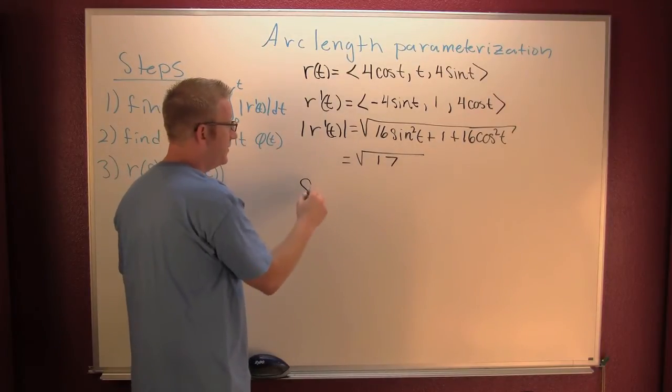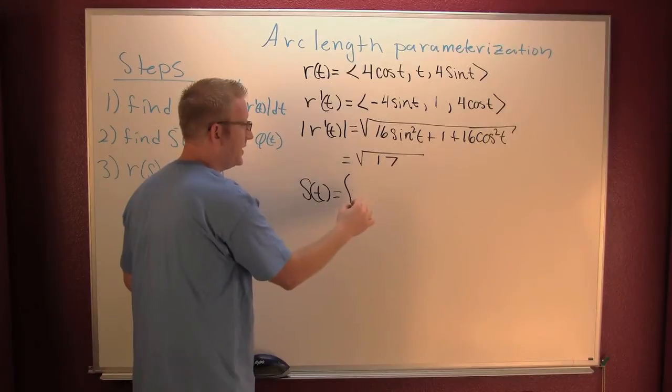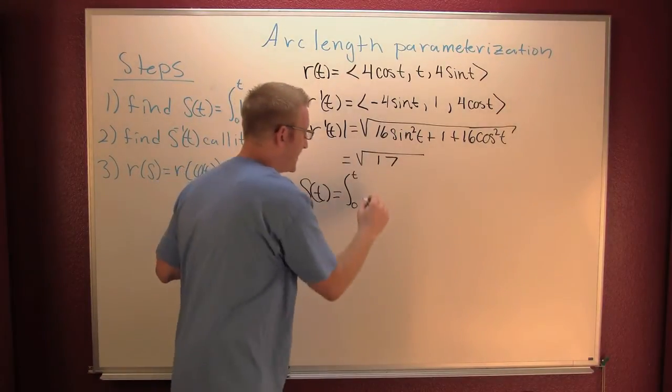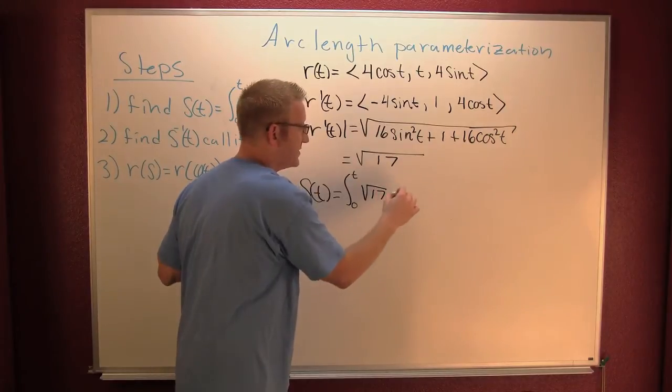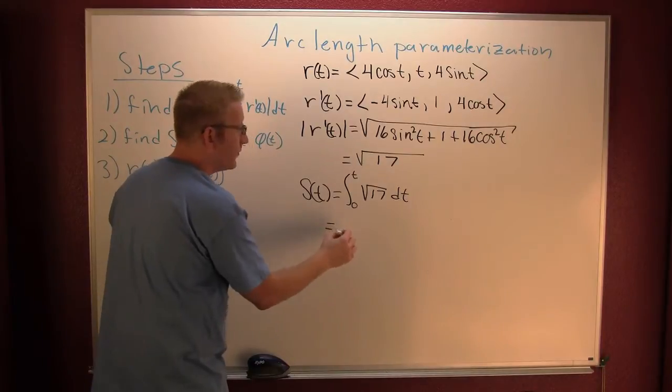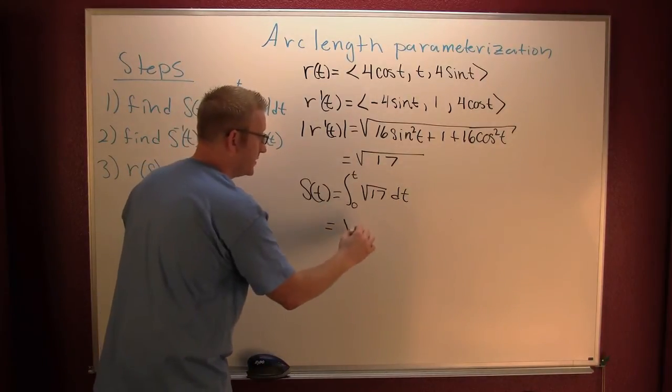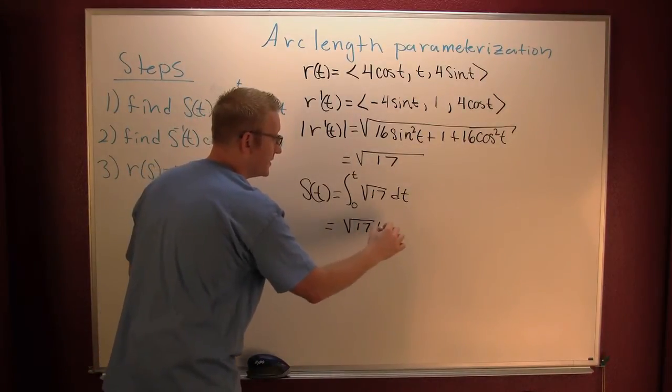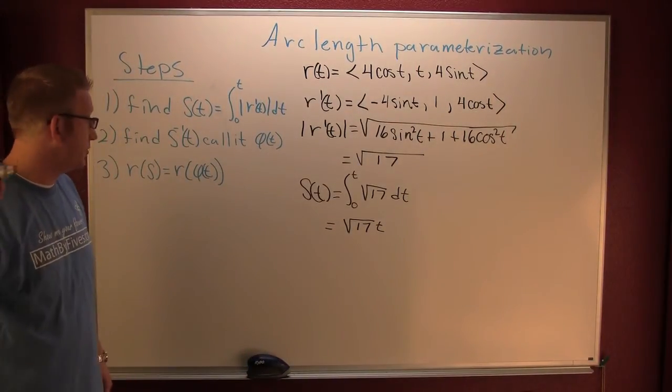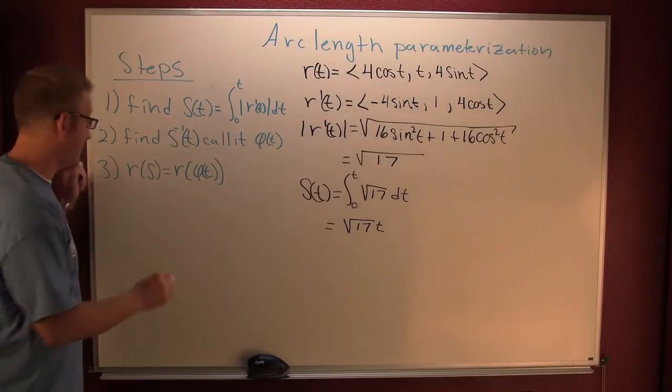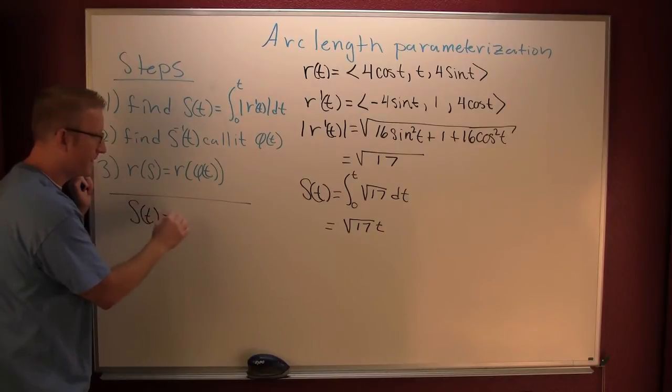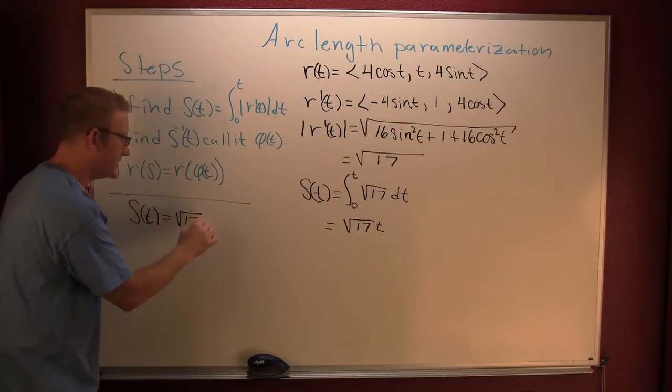How's that looking? Mighty fine, mighty fine! Let's find my arc length, my s(t). That's the integral from zero to t of that square root of 17 dt. Great, that's a constant, so when we integrate it we get square root of 17 t. Excellent! I find cruising on through.